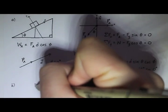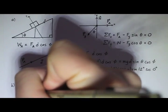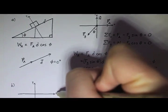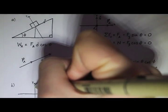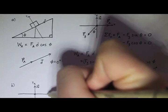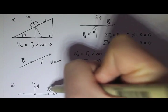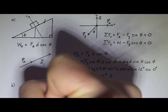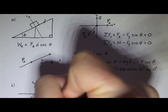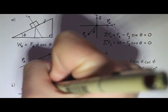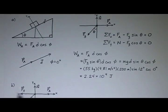My free body diagram is going to look almost the same — I'll redraw it right here. So here's the y-axis, here's the x-axis. I'm still going to have a normal force, an applied force, and the weight, which I'll call F sub g, at the same angle. Except now I'm also going to have a friction force, which is opposing the motion.